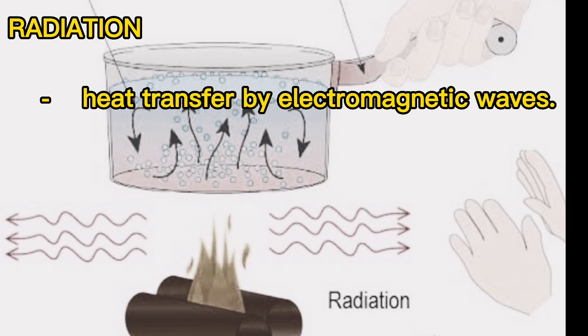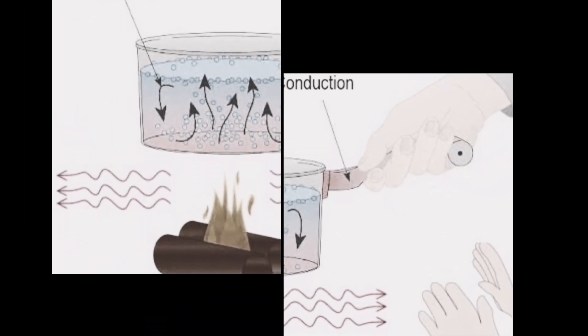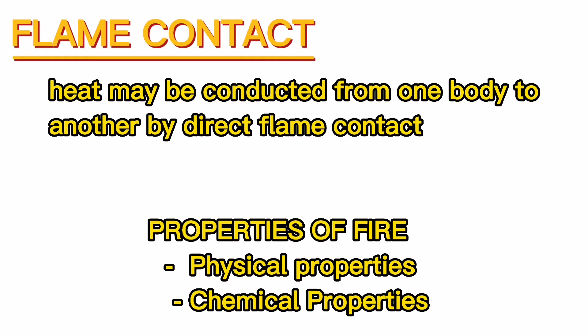Radiation — heat transfer by electromagnetic waves. The last form of heat transfer occurs by radiation. Heat energy can be transmitted directly when molecules collide with one another and cause waves of heat energy to travel. Flame contact: heat may also be conducted from one body to another by direct flame contact.